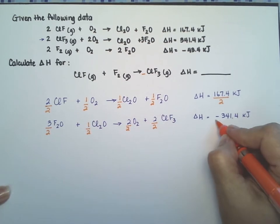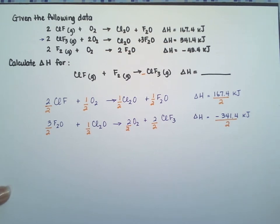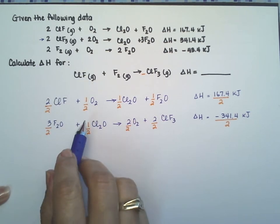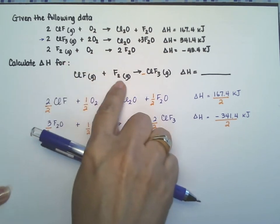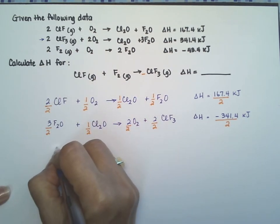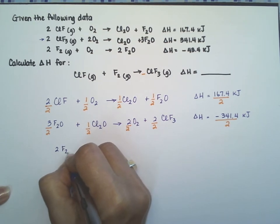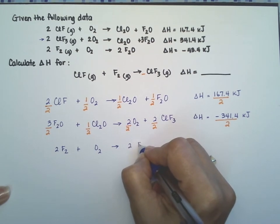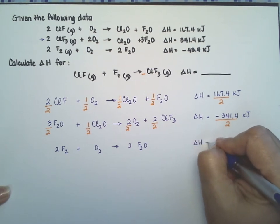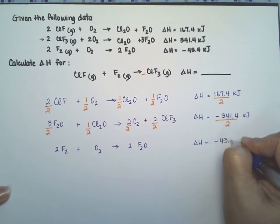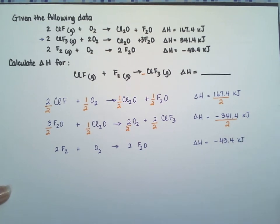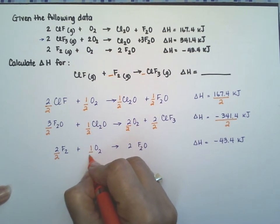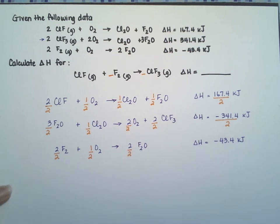The last one: I want the fluorine here as a reagent, so I need to use this one here. Two F2 plus O2 giving me two F2O. The Delta H is minus 43.4 kilojoules. They only want one mole of fluorine gas, so go ahead and divide everything by two, including the Delta H.